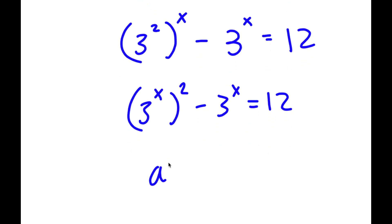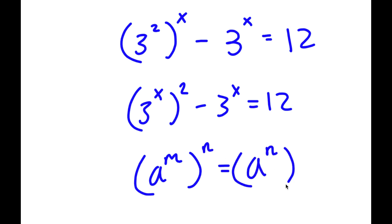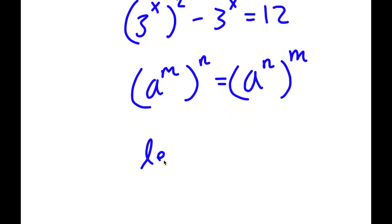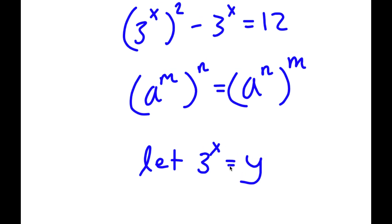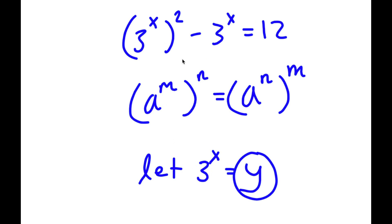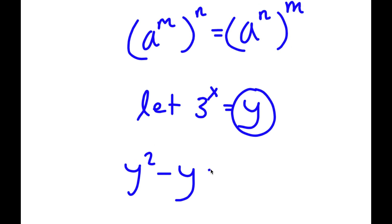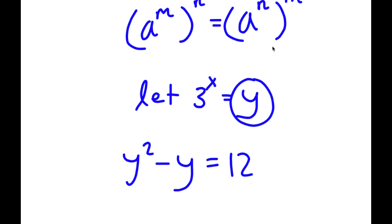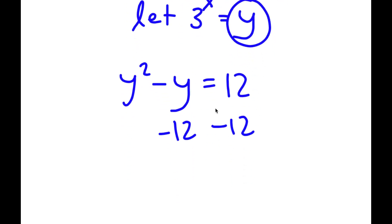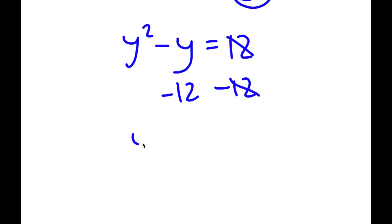Because if I have something in the form a to the power of m to the power of n, this is also equal to a to the power of n to the power of m. So now I'm going to let 3 to the power of x equal the variable y. So if I substitute y in for 3 to the power of x, I get y squared minus y is equal to 12. Now I'm going to subtract 12 on both sides, and I get y squared minus y minus 12 is equal to 0.